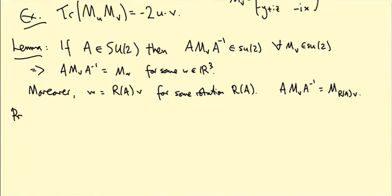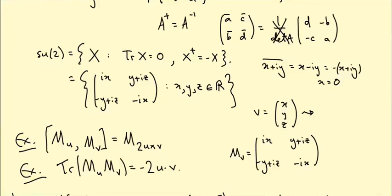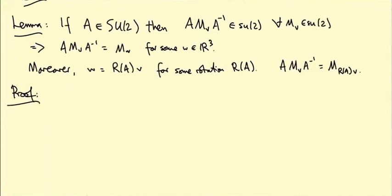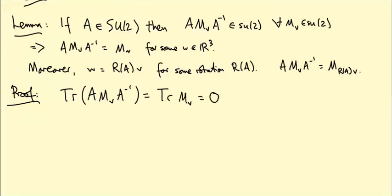To prove A·M_v·A⁻¹ ∈ su(2), we check two things. First, trace(A·M_v·A⁻¹) = trace(M_v) = 0, since trace is invariant under conjugation. That's the first condition satisfied.